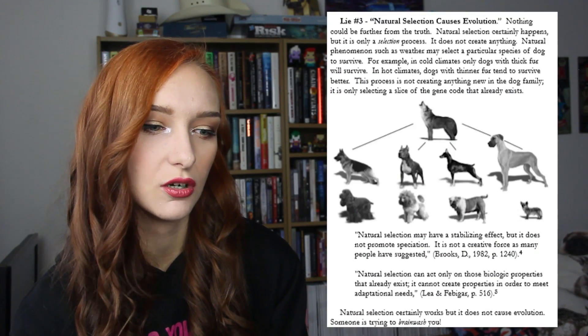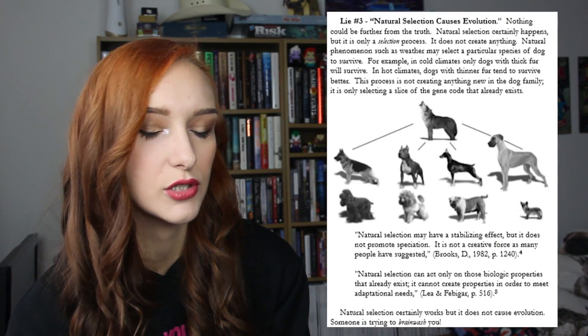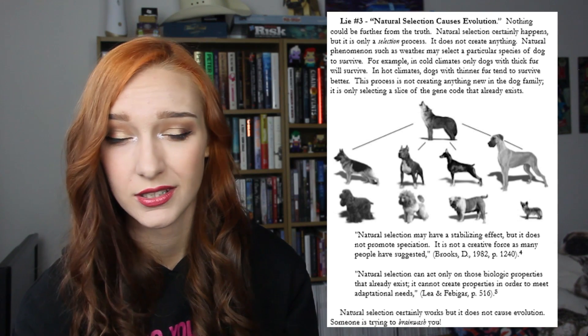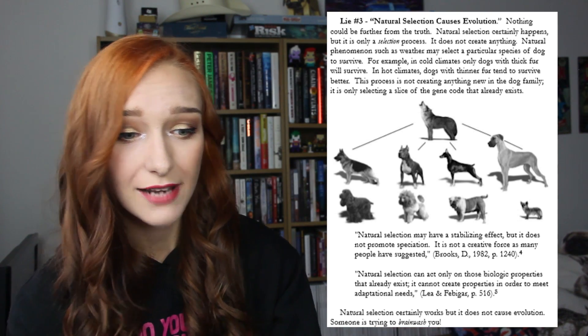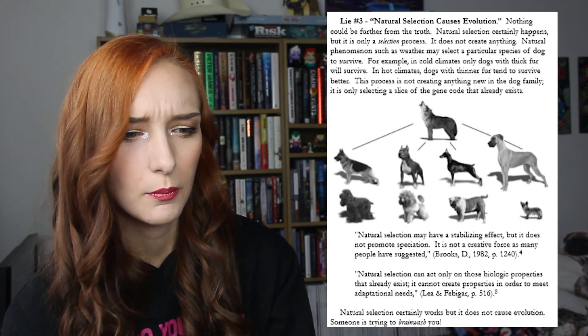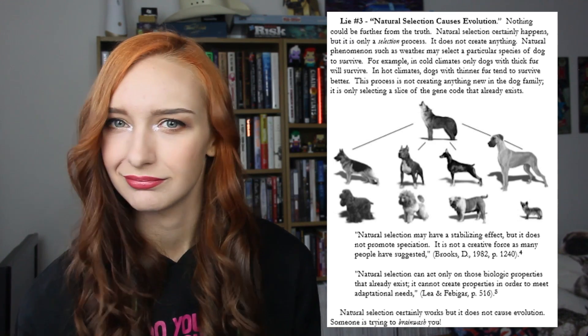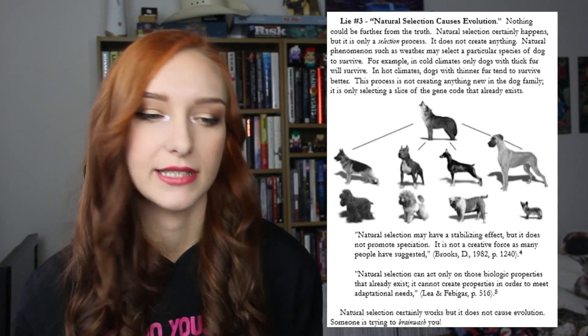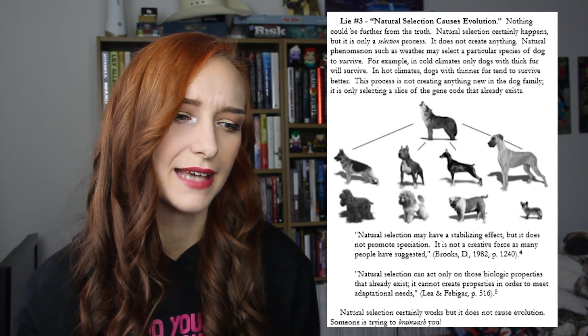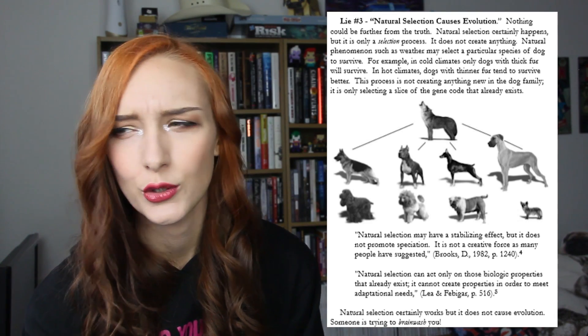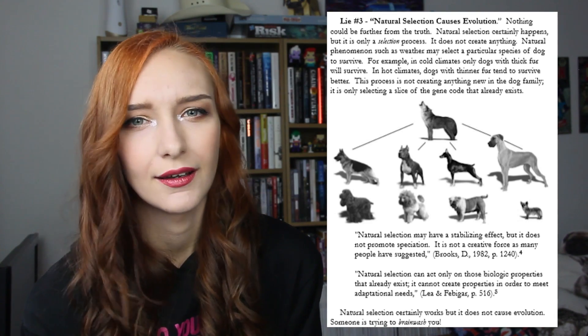Skipping forward a little bit in his book, Kent writes that lie number three in science textbooks is that natural selection causes evolution. He actually gets off to quite a good start because he knows that natural selection certainly happens, but it's only a selection process — and then he ruins it by saying it does not create anything. Well, yeah — and who claimed that? No one. It's a literal straw man.